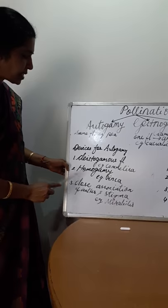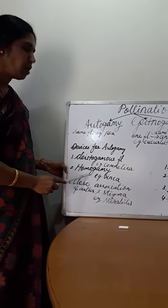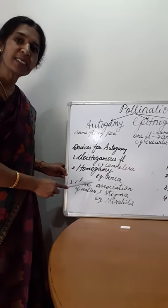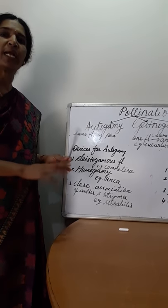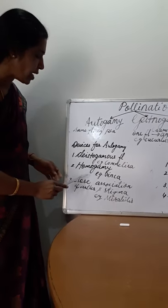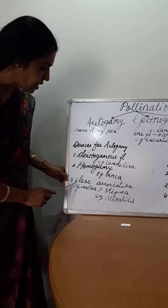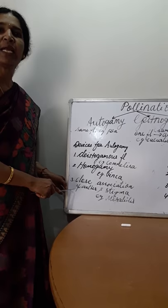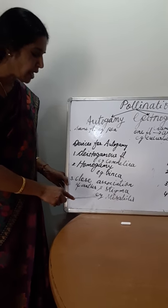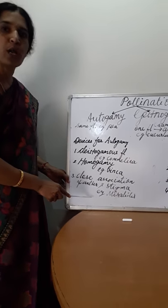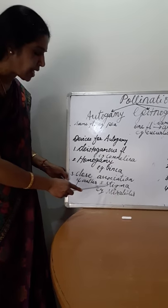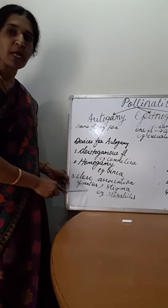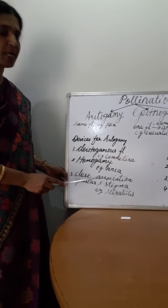The second device is homogamy. Homo means same — the anther and stigma both mature at the same time. That is known as homogamy. The third device is the close association between anther and stigma. Example: Mirabilis, that is the 4 o'clock plant. Both anther and stigma have a close association, so it ensures self pollination and prevents cross pollination.